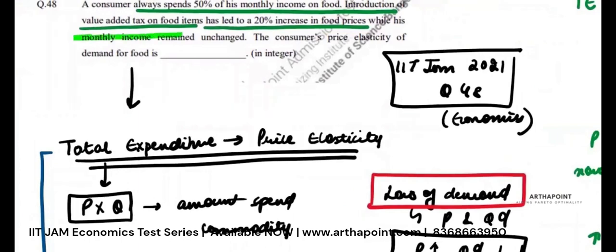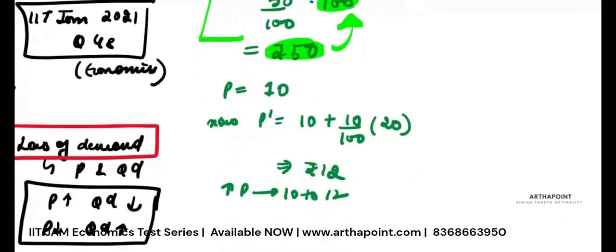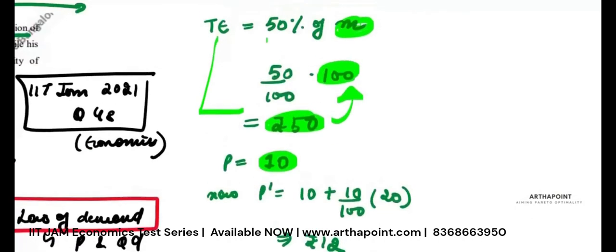While monthly income has remained unchanged at 100, if my income has not changed, I will keep spending 50 rupees on food because I'm spending 50% on food. I'm not concerned with whether the price was 10 or 12. I spend 50% of my income on food. My income is unchanged, so my expenditure on food does not change.